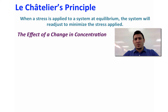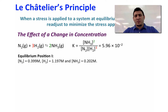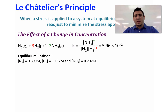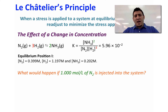First we will start with the effect of a change in concentration. Consider the following example, where we have the value of K equal to 5.96 times 10 to the power minus 2, and also we have the equilibrium concentrations at position number 1, which is before the stress. What would happen if one molar of N2 gas is added to the system?